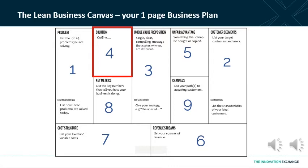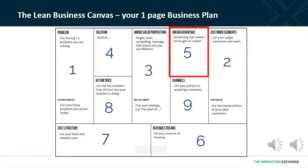The fifth area is unfair advantage, sometimes called competitive advantage. Is there something that you are doing that can't be easily copied? That might be with the core product — your solution is bigger, stronger, faster than what's on the marketplace at the moment. But often that unfair advantage is found in other areas on the Lean Business Canvas, such as your channels, your route to market, or your pricing mechanisms, which existing incumbent competitors may not wish to follow. So think about all of the areas where you might be able to have an advantage over the competition.